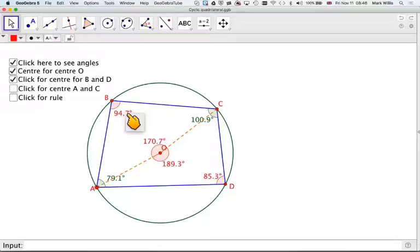Yes. This one here is half of this one here. And likewise, this one here is half of this one here. And this is because the angle at the center is twice the angle at the circumference.